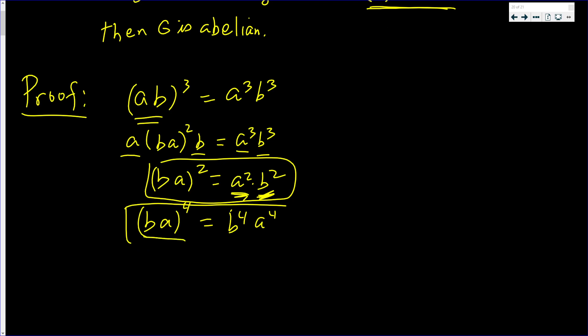Fair enough. This equals that. But this here also equals to b(ab)³b.